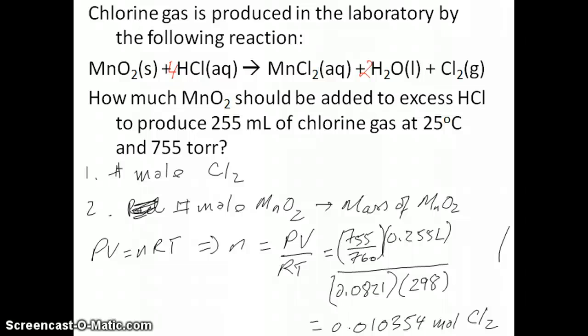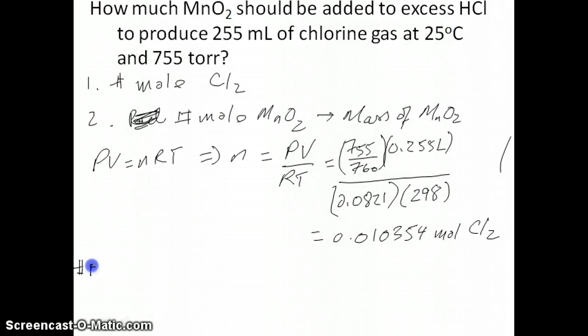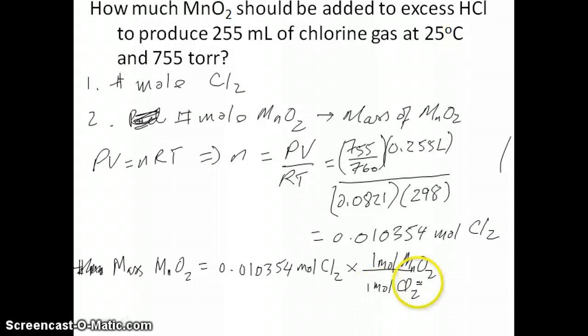Let's go straight to the mass calculation. The mass of MnO2 would be calculated from the moles of Cl2 that we have: 0.010354. I'm putting in all these numbers so I can round at the very end. We have moles of Cl2 and moles of MnO2, which have a 1 to 1 stoichiometry as we just said.